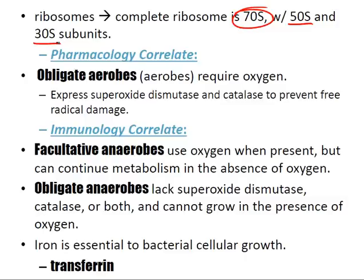Obligate aerobes require oxygen as the final electron acceptor, the same as in eukaryotic cells at complex four. They express superoxide dismutase and catalase to prevent free radical damage. An immunology correlate: chronic granulomatous disease (CGD) is a disorder in which free radical generation is impaired in immune cells.